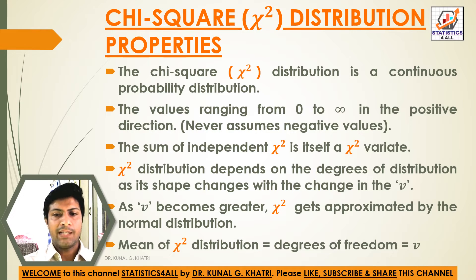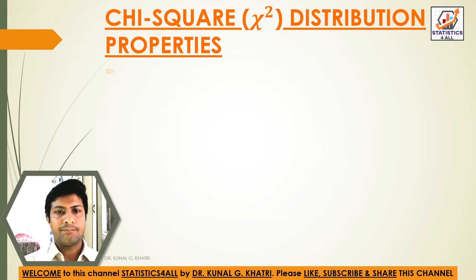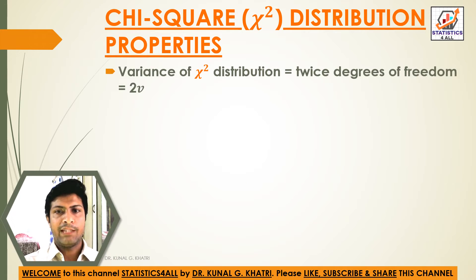The mean of the chi-square distribution is equal to the degrees of freedom, that is, equal to v. The variance of the chi-square distribution is equal to twice the degrees of freedom, that is, equal to 2v.